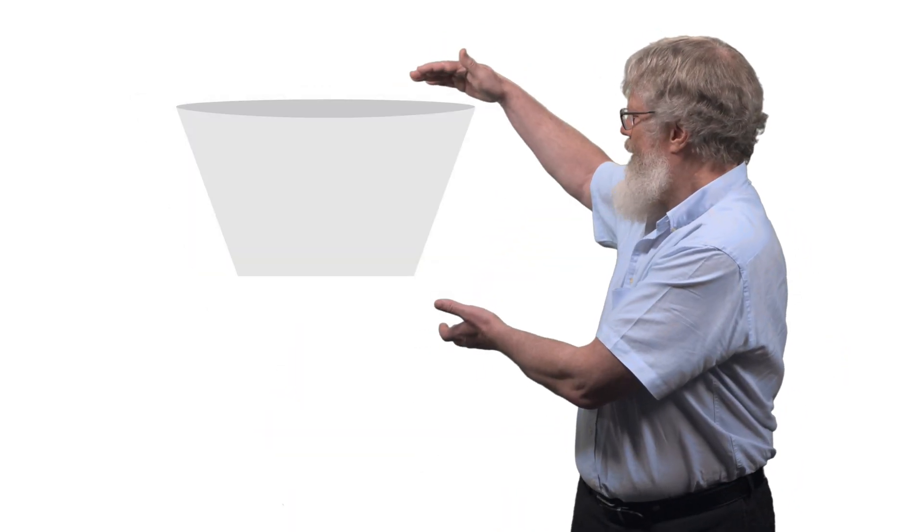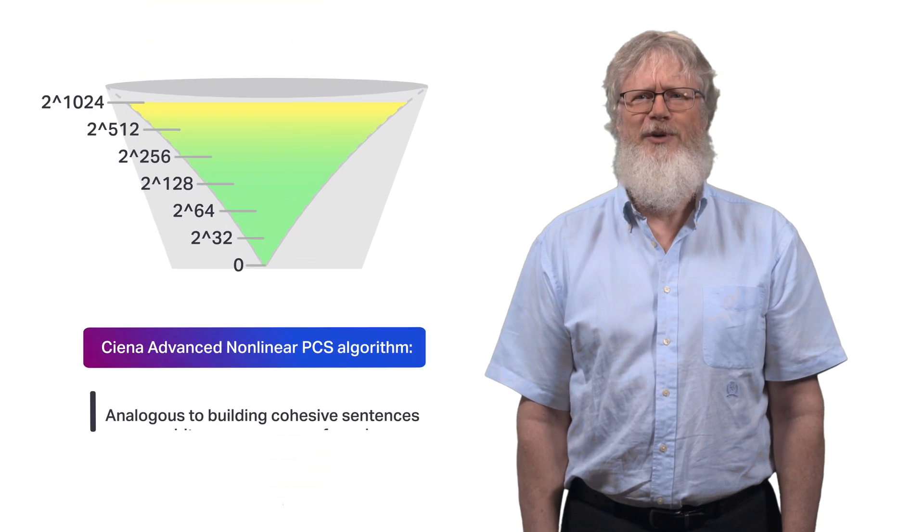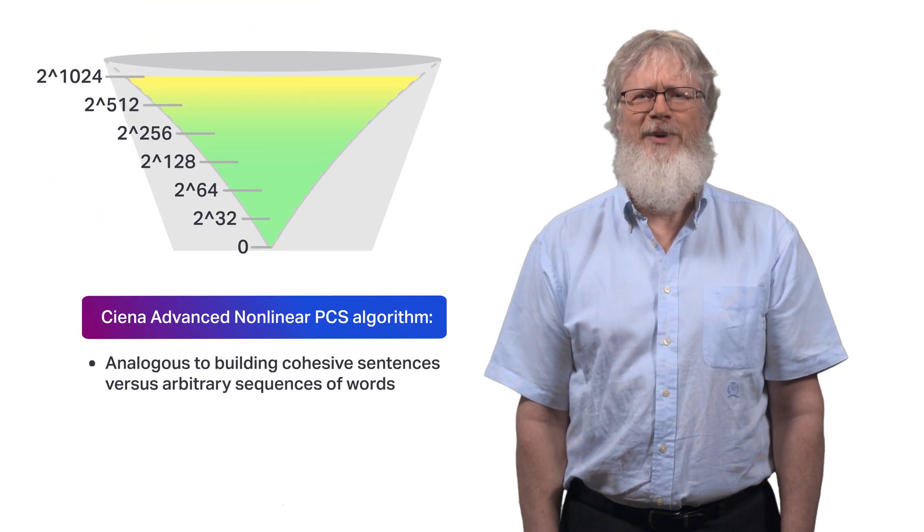Rather than doing this one symbol at a time, let's construct sentences of 128 dual polarisation symbols. Let's put those in a bucket. It's a very large bucket, so we'll use a log scale to show it goes up to 2 to the 1024 different sentences in that bucket.